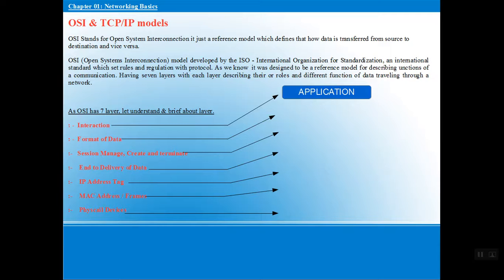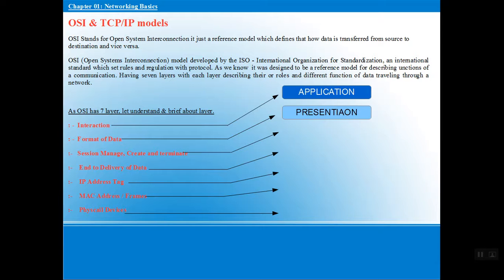The first layer is the Application layer. The work of the application layer is interaction — how we interact with our PC. If you open any browser and go to google.com, facebook.com, or gmail.com, what appears on our screen is the interaction part. That is the Application layer performing the task of user interaction.